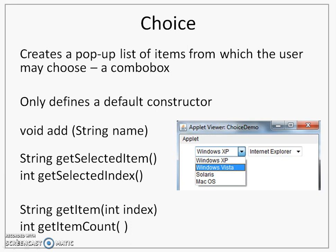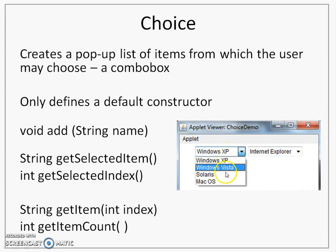In that pop-up list, I can put some items or elements. This is also popularly known as a combo box. It appears with only one item displayed, and when I click on the arrow, the entire set of items that are part of this list will pop up.